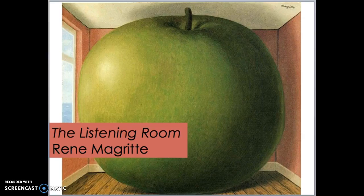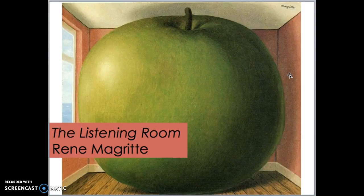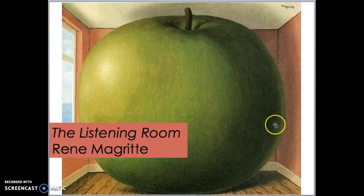The next one is The Listening Room — this is a bizarre painting where there's a gigantic apple in a room. Or some people think maybe the apple is normal-sized and it's just the room that's very small. Some kids said they know why it's called The Listening Room: if you were in there trying to hear each other, you'd have to listen very carefully because you'd be smashed up against the walls. Some people also said maybe the apple can't hear because he doesn't have ears. It's called The Listening Room by René Magritte.